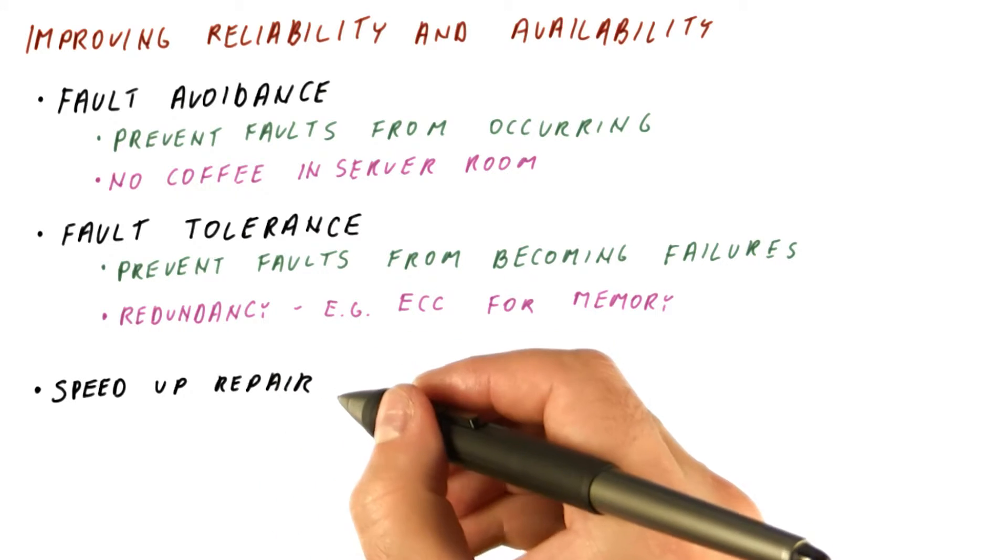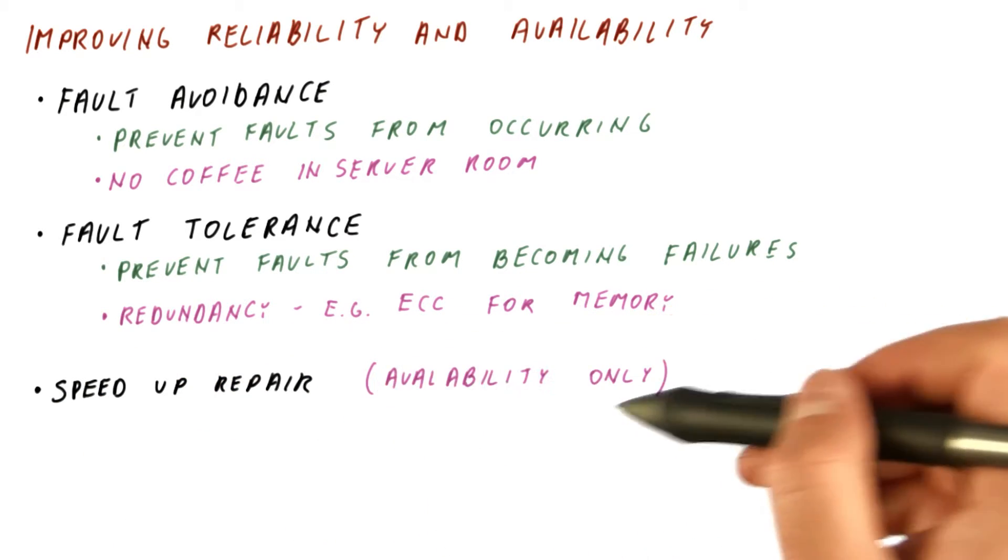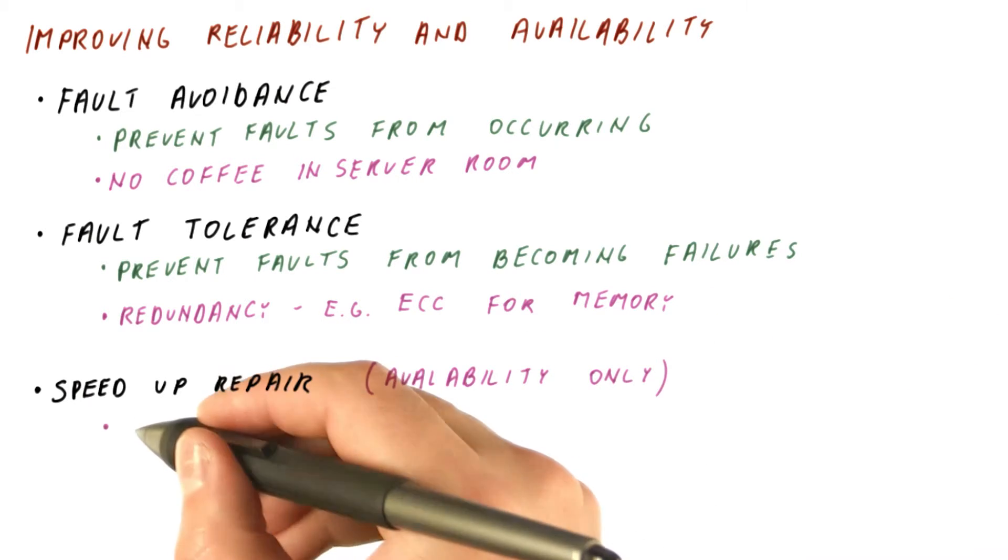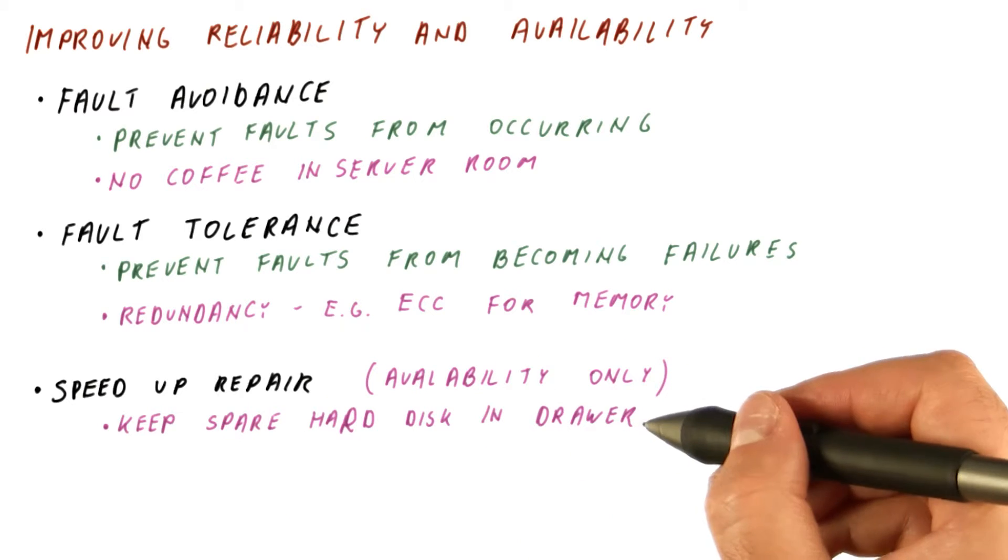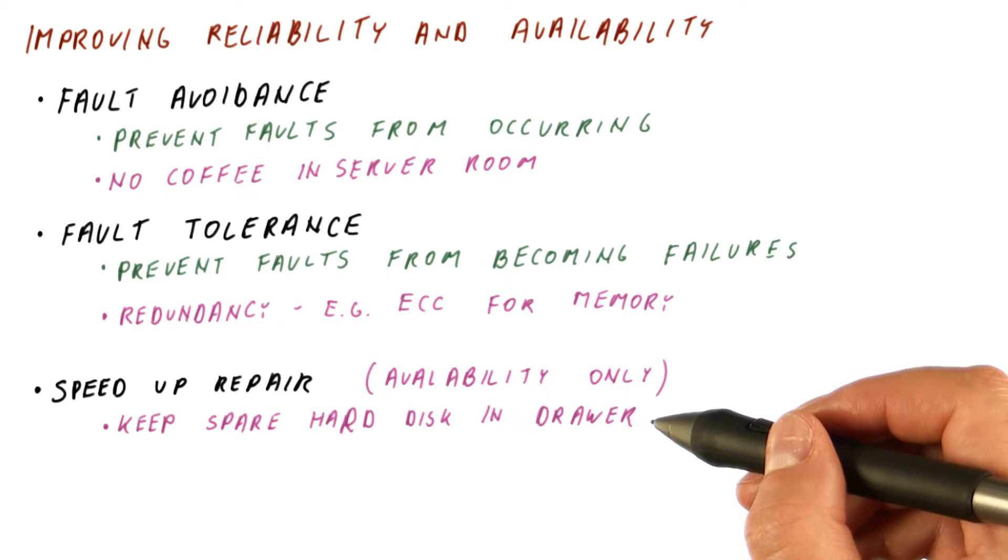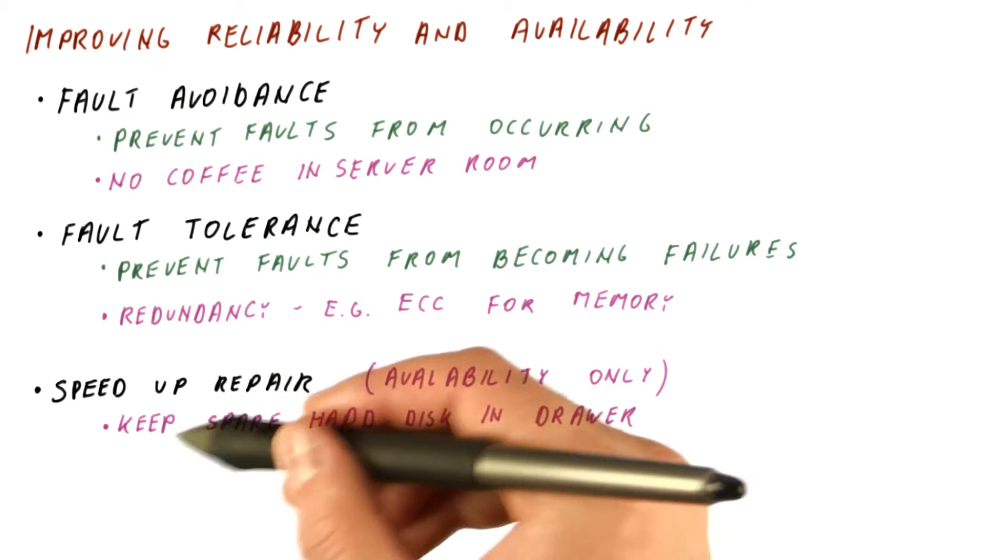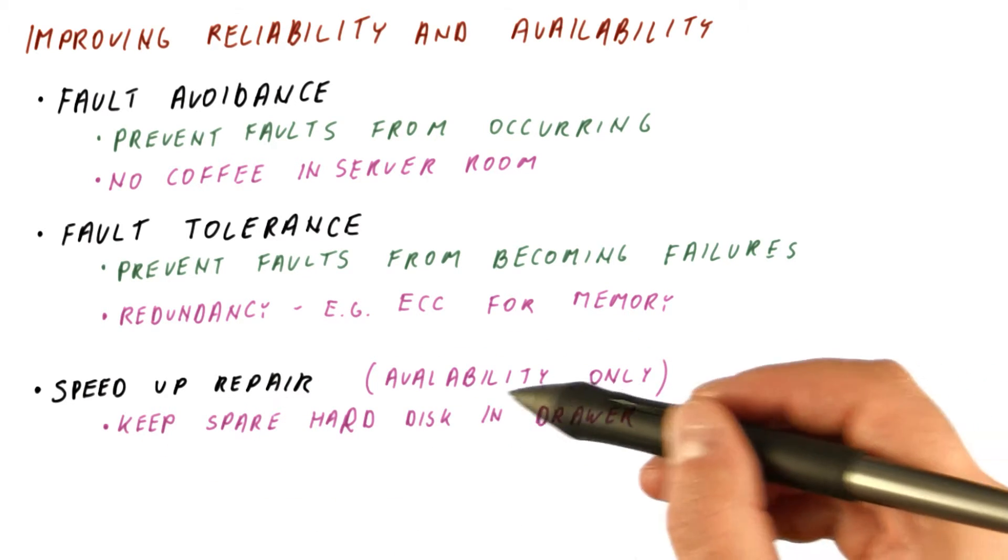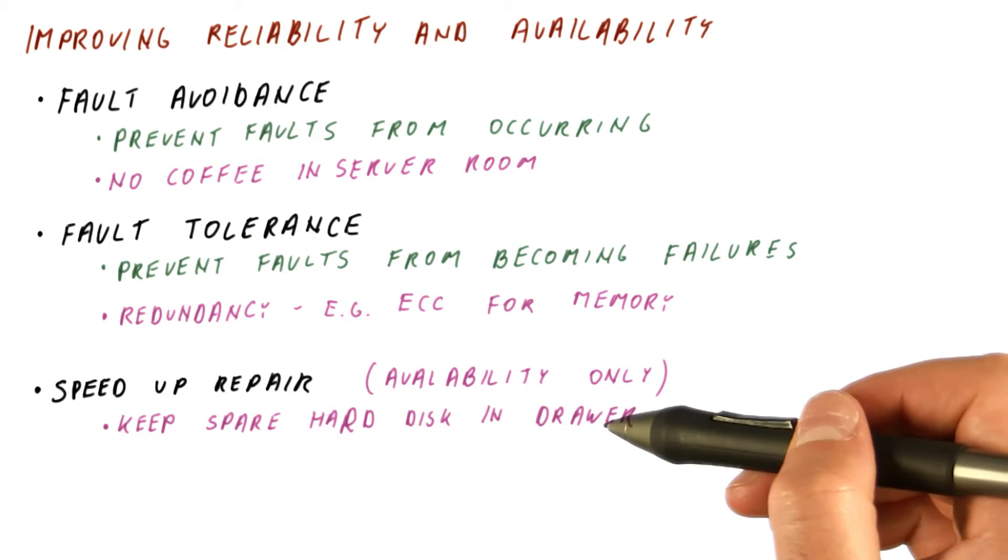And then we can also have techniques like speeding up the repair, which really affect only availability. An example of such a technique is when we have a spare hard drive in a drawer. So when a hard drive fails, we can quickly replace it. So this is a technique where basically the failure will still occur, but we will shorten the period that it takes to repair the system by not having to wait for a new hard drive to arrive. We already have one handy on site.